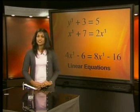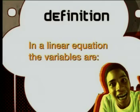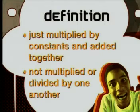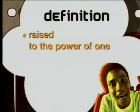This is a definition of a linear equation. In a linear equation, the variables are just multiplied by constants and added together, not multiplied or divided by one another, and raised to the power of one.